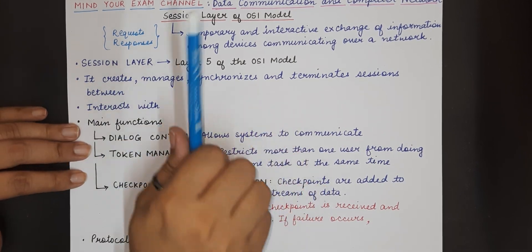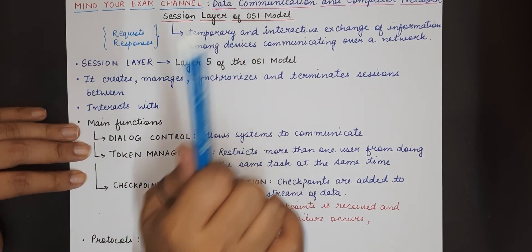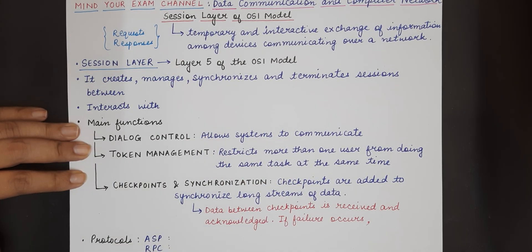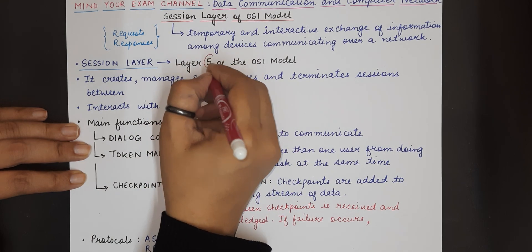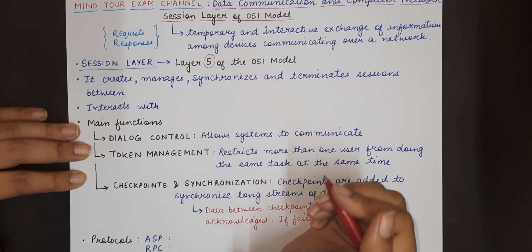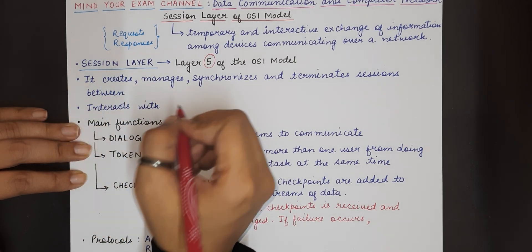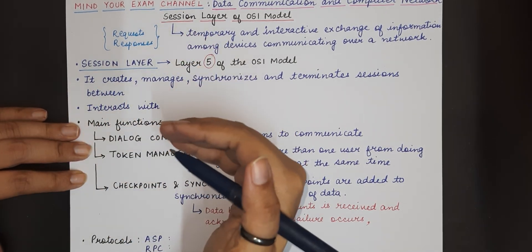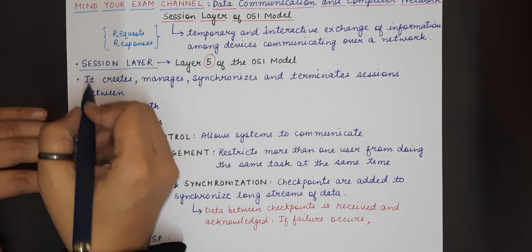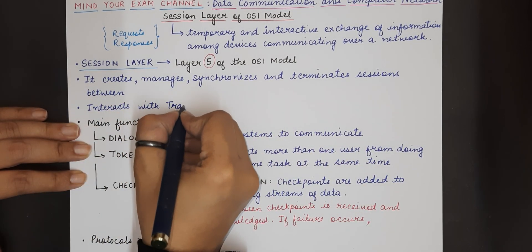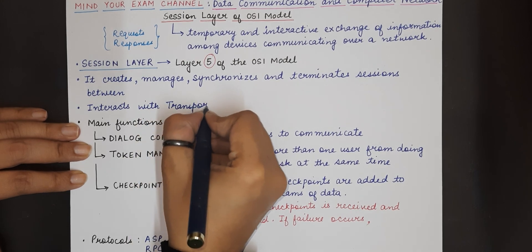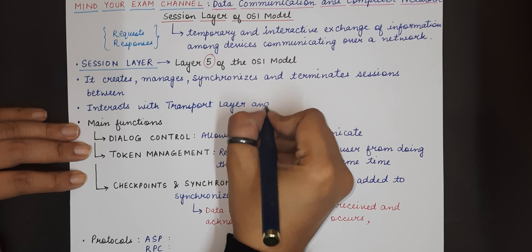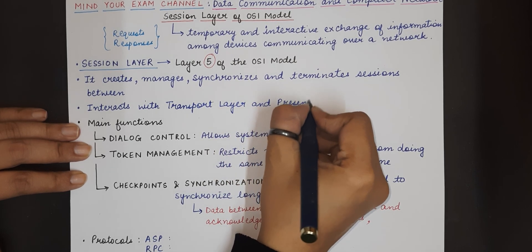Now let us understand what is the session layer of the OSI model. The session layer is the fifth layer of the OSI model. This is a very important point that you must know and remember that session layer lies just above the transport layer and just below the presentation layer. So it interacts with the transport layer as well as the presentation layer in the OSI reference model.